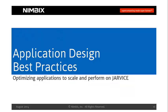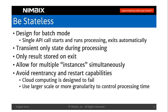Let's talk about best practices for architecting and optimizing your applications to scale using Jarvis Parallel NAEs. The first thing we strongly recommend is to be stateless. Ideally you're designing for batch mode — the most efficient way to scale, from both a performance and economic perspective, is to use batch mode so that a single API call starts and runs the processing and then exits automatically once done. This works best when you only keep transient states during processing and are not writing persistent state while processing.